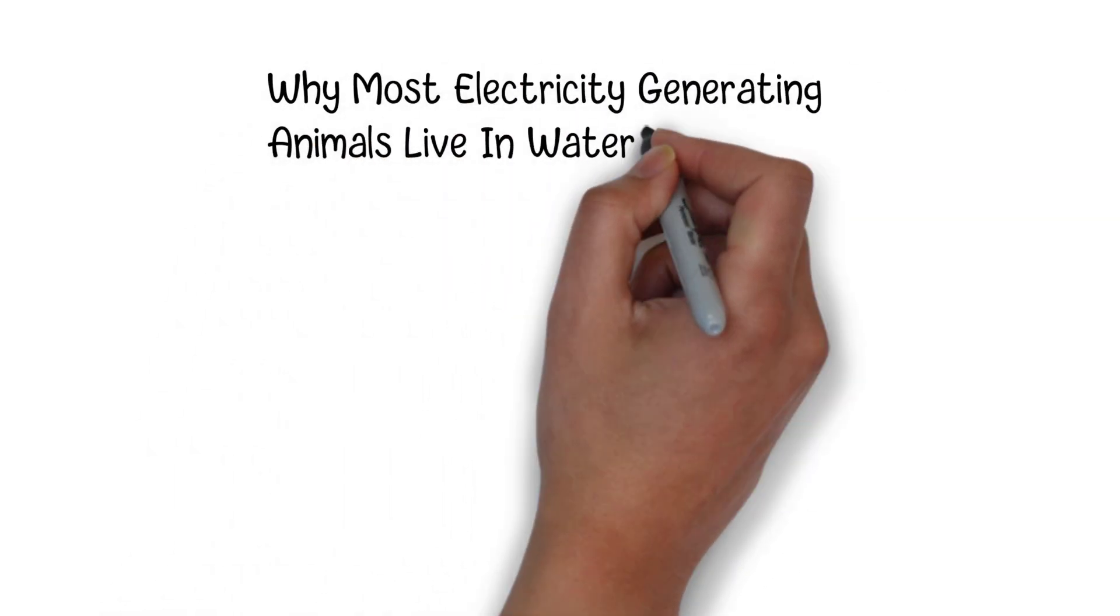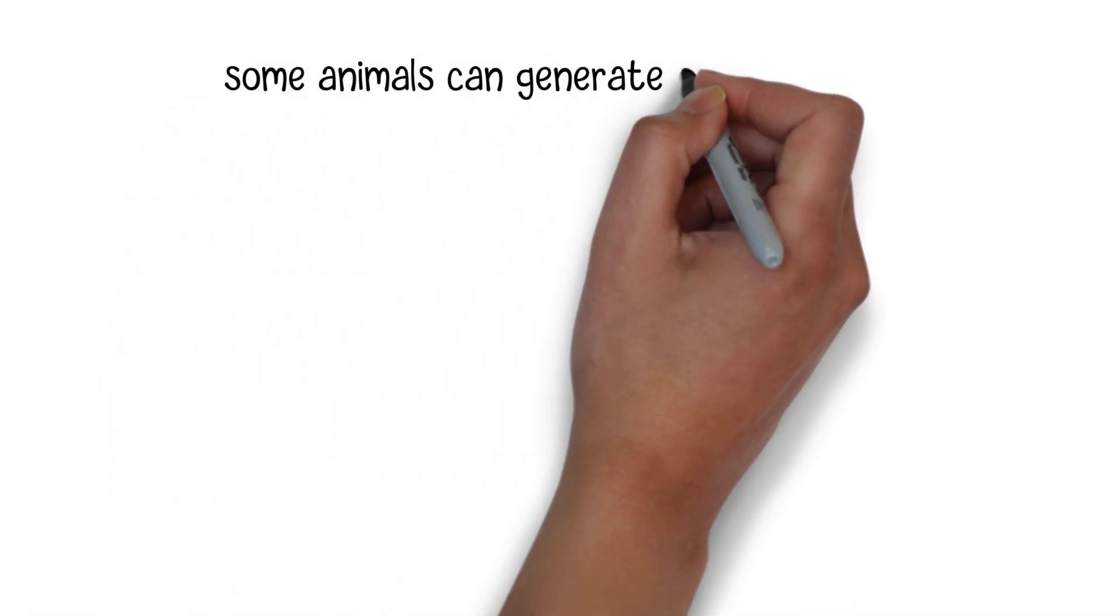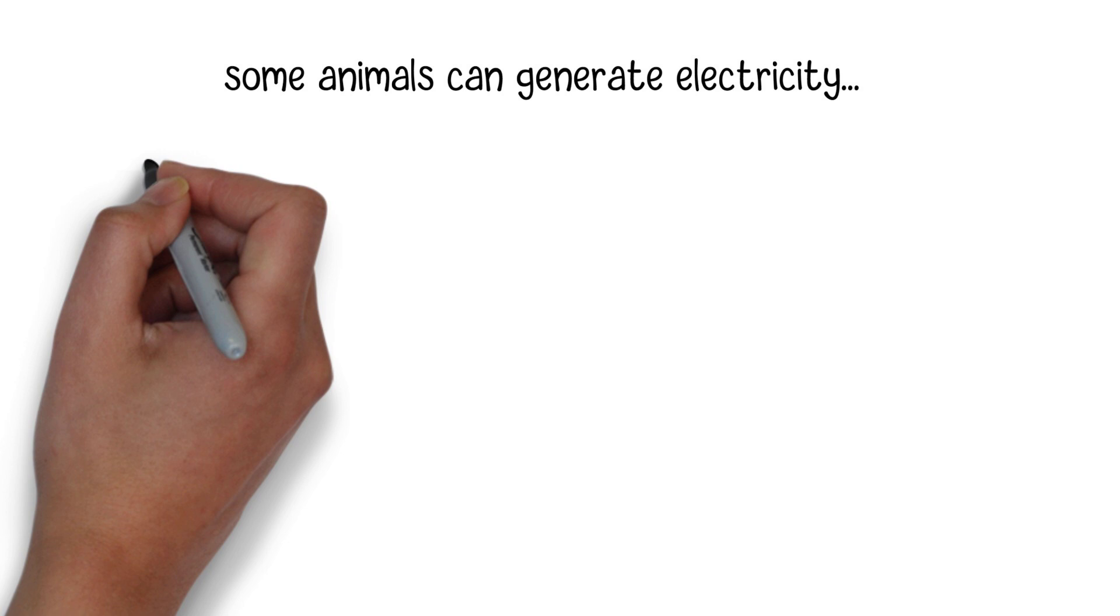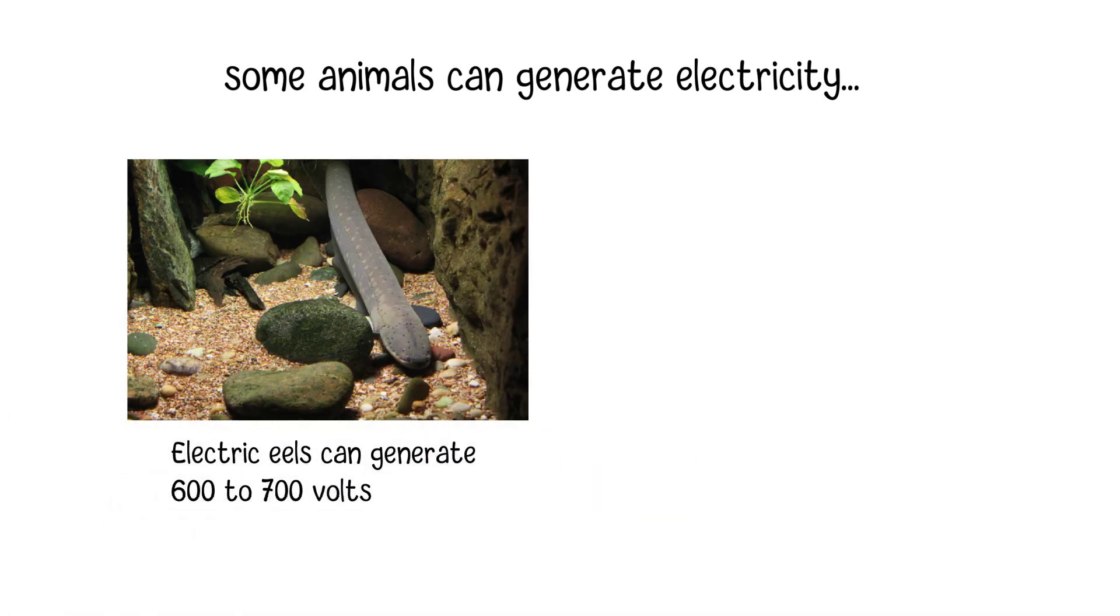Why do most electricity-generating animals live in water? As we know, some animals can generate electricity. A good example is electric eels, where the total voltage produced can reach up to 600 to 700 volts.